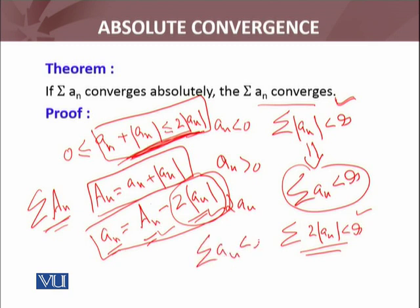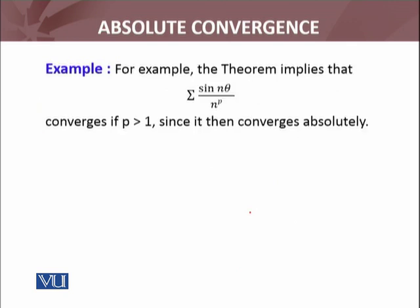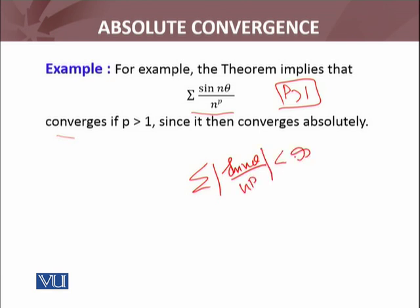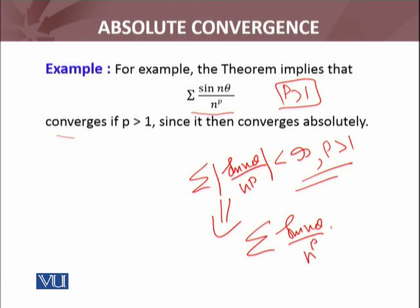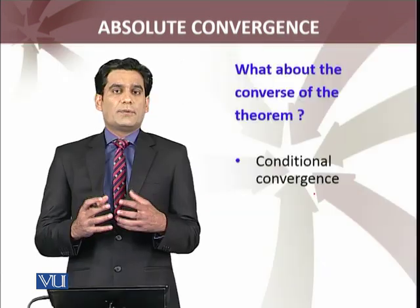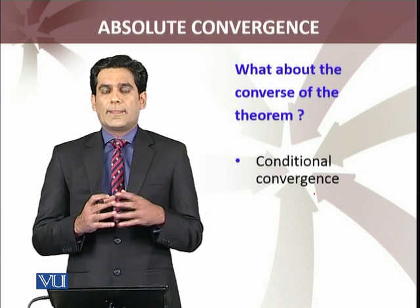Now let's apply this. The theorem implies the series we discussed—Σ(sin(nθ)/nᵖ)—is absolutely convergent when p > 1. We showed this series is convergent whenever p > 1. The series will be absolutely convergent. By using that result, we can conclude that Σ(sin(nθ)/nᵖ) is convergent. This series has positive as well as negative terms. We discussed a very important result which says that absolute convergence implies convergence.